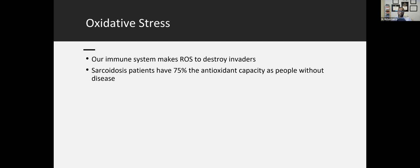Our immune system makes these things called ROS or reactive oxygen species, and that's mainly to destroy invaders or if there's tissue that needs to be replaced, repaired, or turned over.